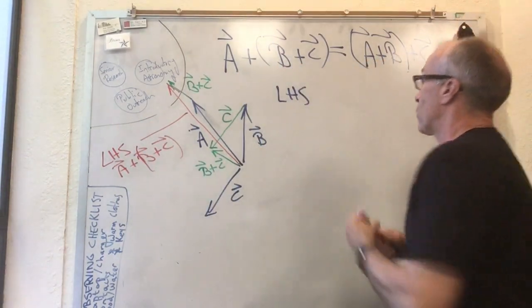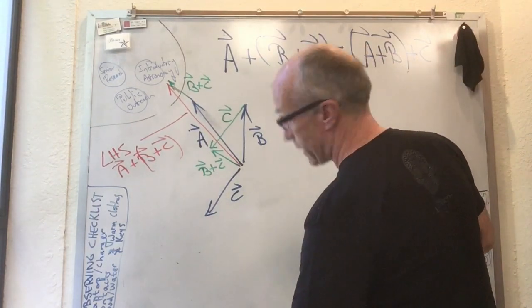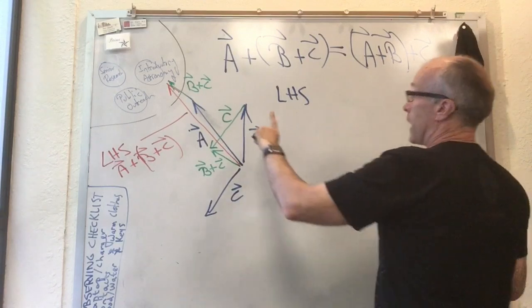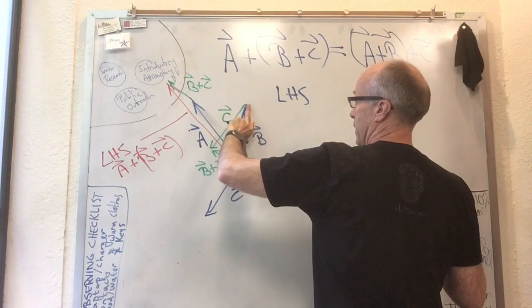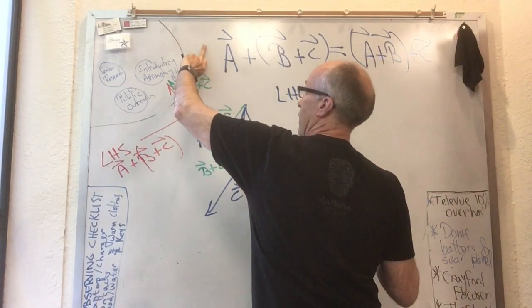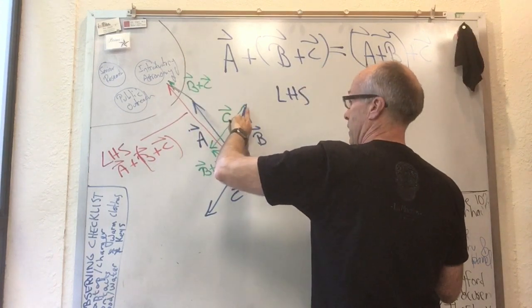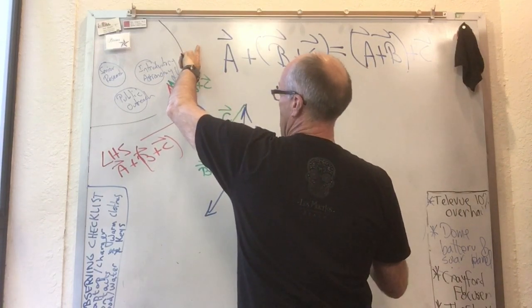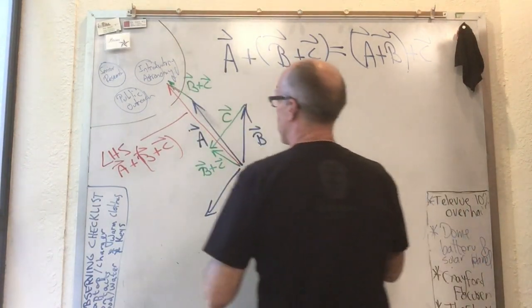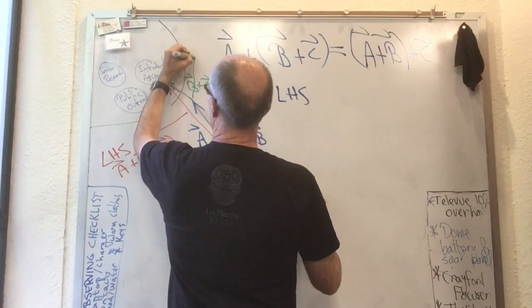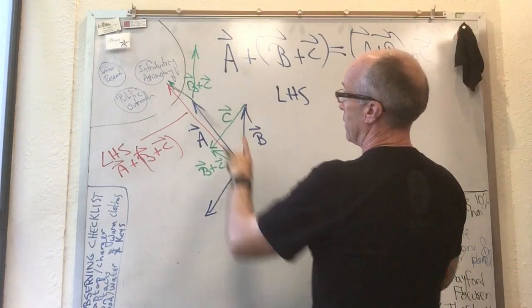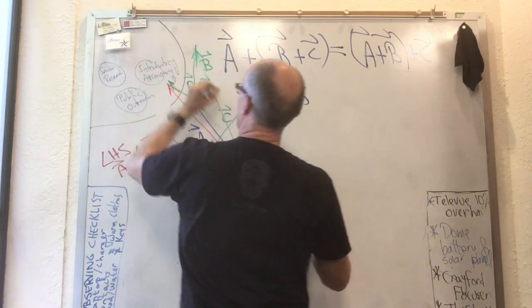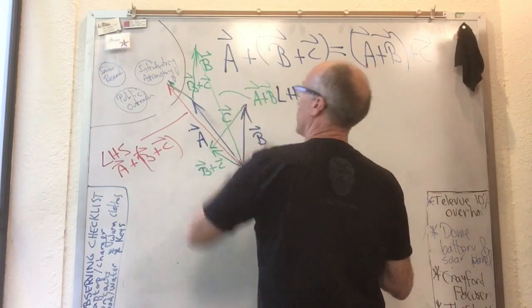Now let's evaluate the right hand side. I'm going to do exactly the same thing except with the right hand side. The right hand side said first add b to a. You take a copy of b, and I need to get it over to the head of a without messing it up. So take b, head it over to the head of a, and make a nice copy of it over there. There's b, there's my copy of b. There's a plus b—that really long vector is a plus b.